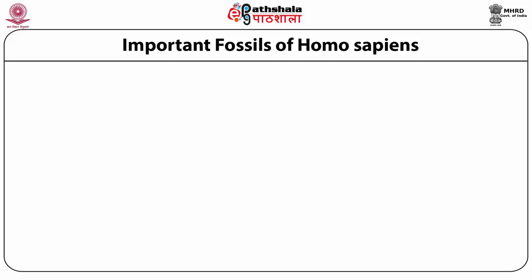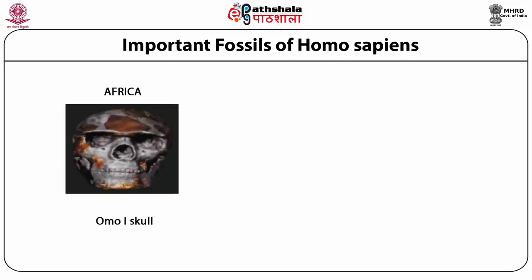Major fossil discoveries of modern humans — first, from Africa. Fossils discovered from Africa are the oldest. Fossils from Omo in Ethiopia are dated about 195,000 years old as determined by radiometric dating. There are marked differences in morphological characteristics between the two fossils discovered from this site: Omo 1 has definitely modern morphological characteristics with a well-defined chin, whereas Omo 2 has a robust, less modern morphology.